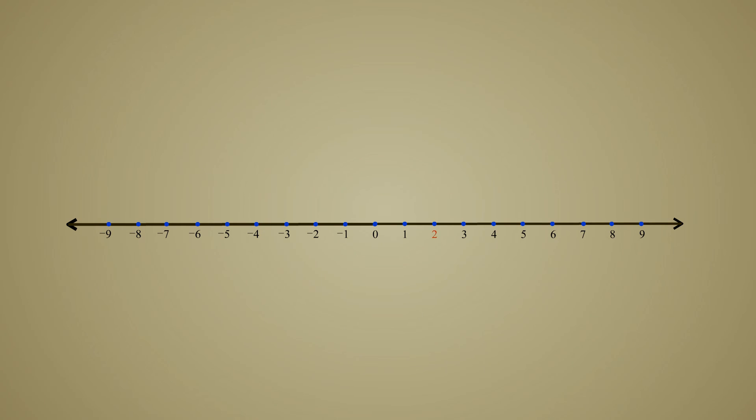For example, the problem 2 plus 3 minus 6 minus 2 plus 4 are instructions to start at 2 on the number line then move to the right 3 units, then move to the left 6 units, then left another 2 units and finally to the right 4 units. At the end of the journey, you will be at the 1 position.